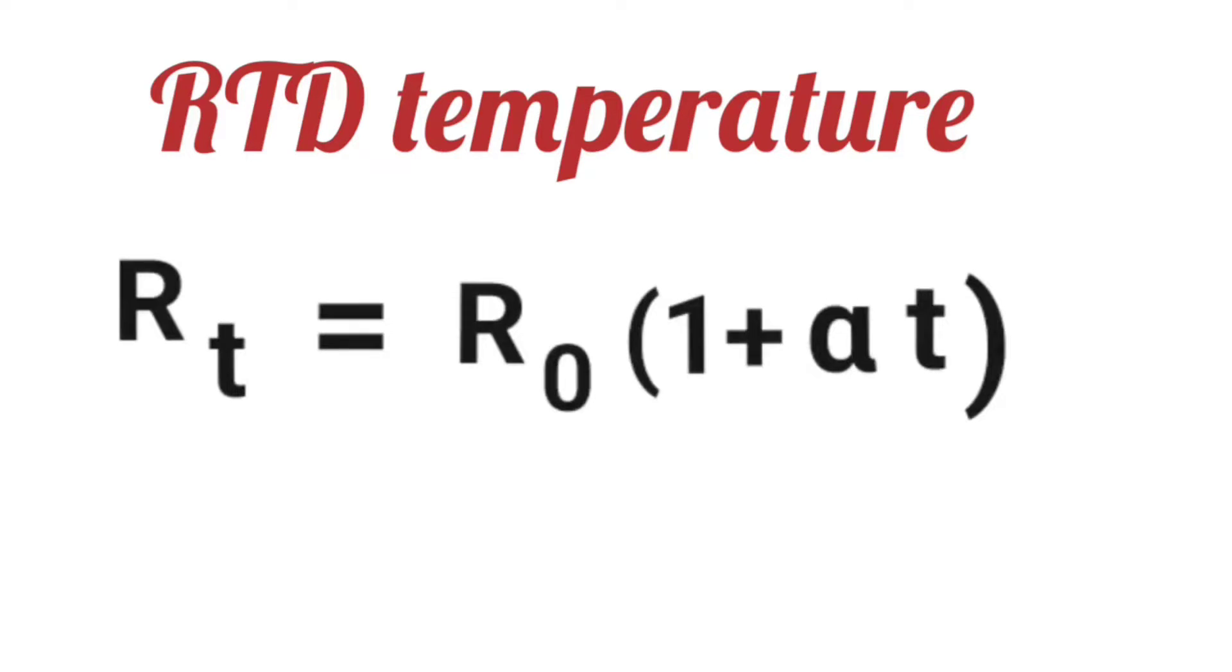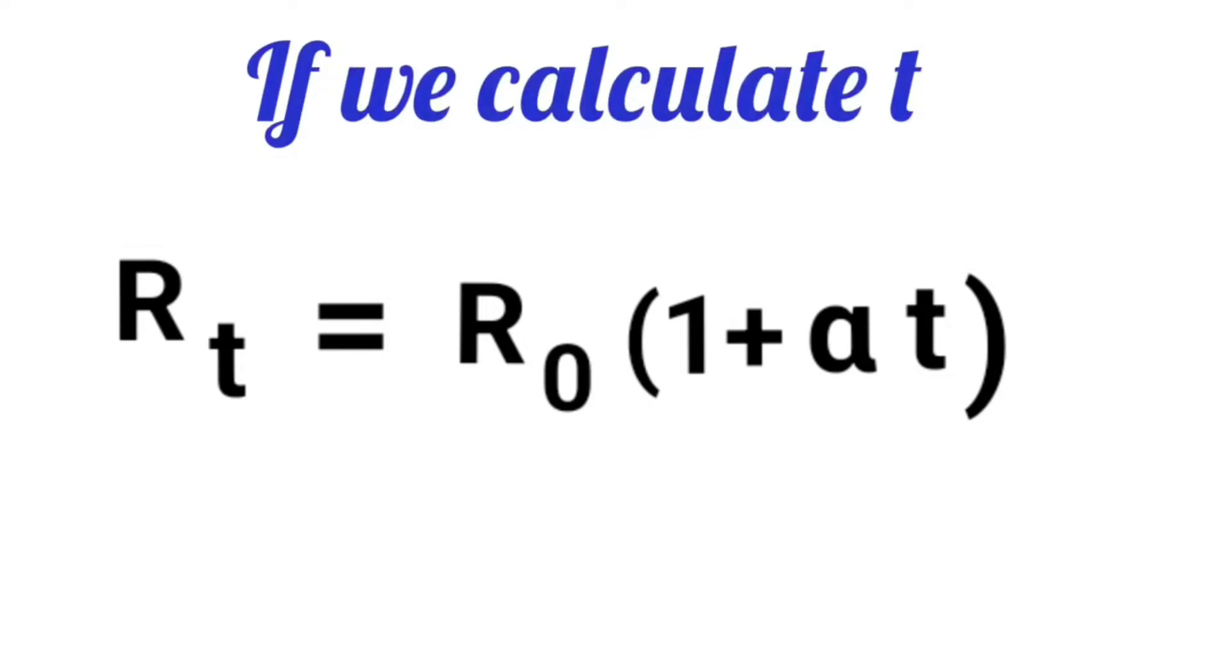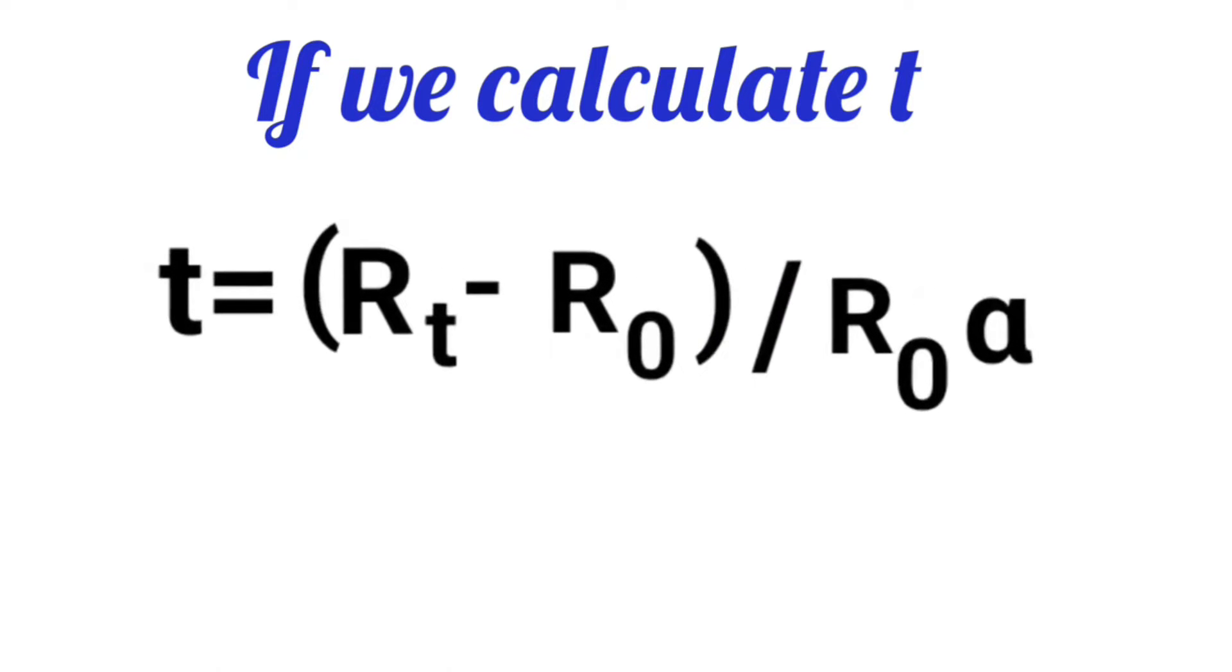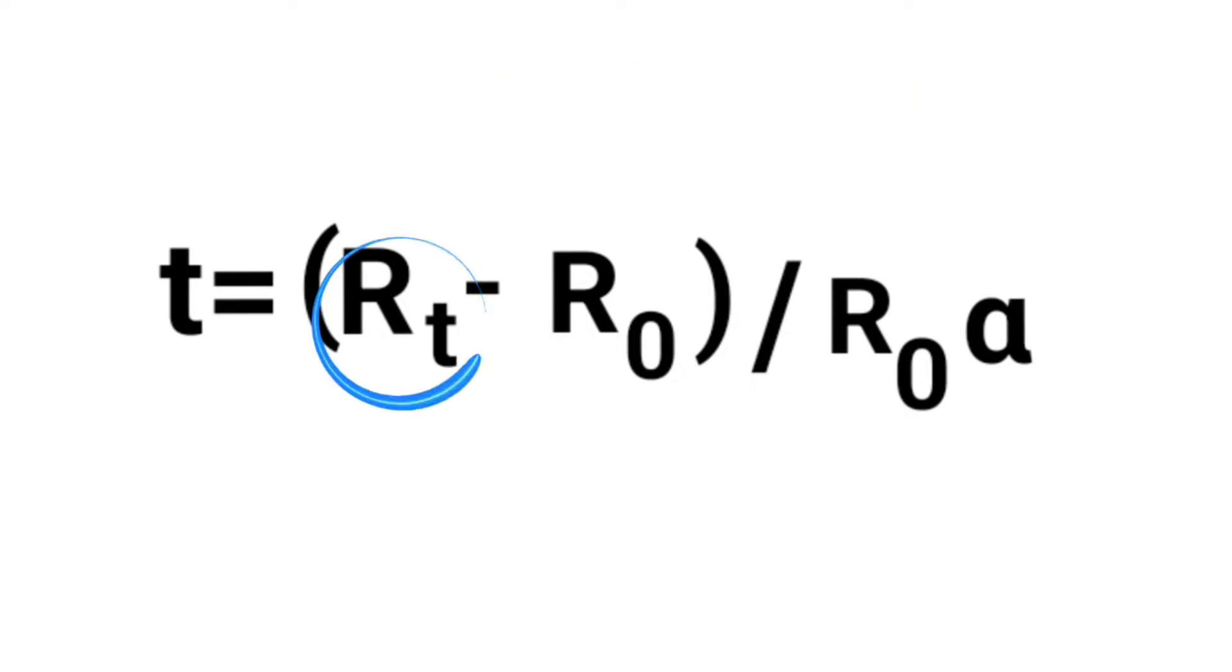Well friends, the temperature calculation formula of RTD is RT equals R0 times 1 plus alpha T. If T, meaning temperature, is calculated from here, then it will become T equals RT minus R0 divided by R0 alpha.